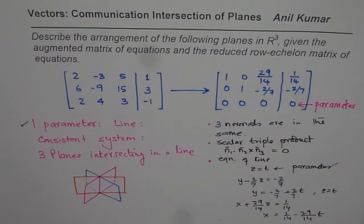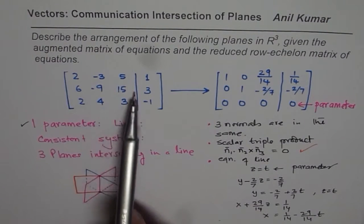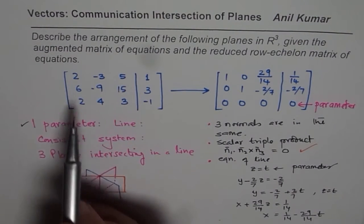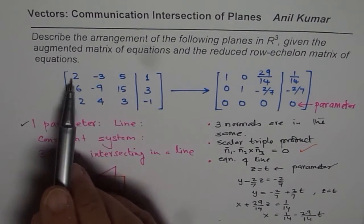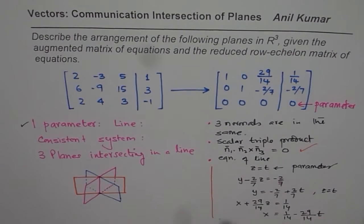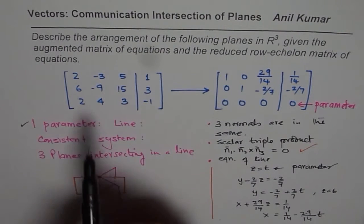So that is one thing you can do, find the intersectional line. Now a very important exercise is to find the triple product and show that this indeed is 0. If you find scalar triple product here, you will notice that it is 0.